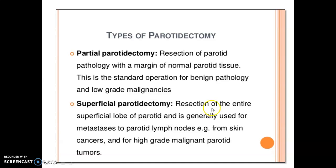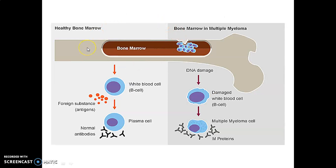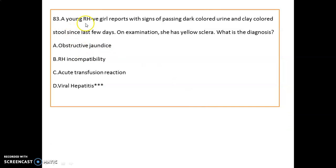Question 82: a patient diagnosed with a lymphoproliferative disorder shows a monoclonal spike in serum and urine, indicative of multiple myeloma. In healthy bone marrow, white blood cells in the presence of antigen are converted into plasma cells. In multiple myeloma, DNA damage occurs in white blood cells, leading to multiple myeloma cells and increasing M proteins.